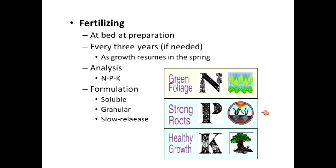If you provide too much nitrogen, you may end up with all green leafy growth and no fruits, because you will discourage flowering. You'll produce leaves at the expense of flowering.